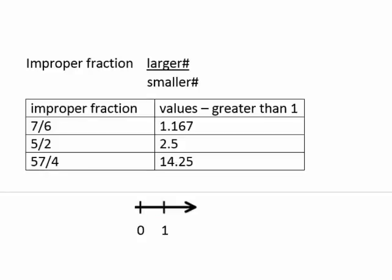The next type of fraction is improper fraction. This is where we have the larger number in the numerator and the smaller number in the denominator. And these values are greater than 1. So, 7 divided by 6, or 7/6 is 1.167. That's rounded. 5 over 2 is 5 divided by 2, or 2.5. 57 over 4, or 57 divided by 4 is 14.25.